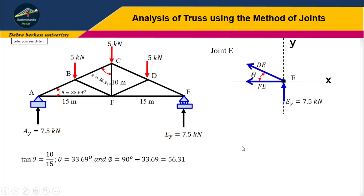Now let us add the forces in the y direction. Summation of forces along the y direction must be zero for this joint to be in equilibrium. DE is inclined, so it has a y component and x component. The y component equals DE sine theta. Therefore, DE sine 33.69 plus Ey, or 7.5, equals zero. Finally, DE equals minus 13.52 kilonewtons. The negative means it's compression, not tension.